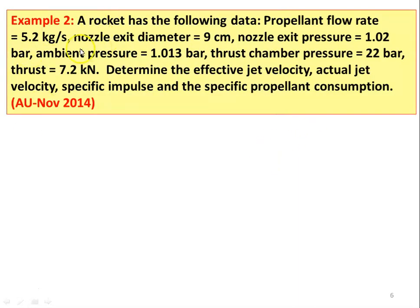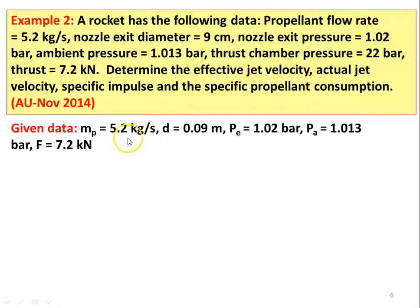Example number 2: A rocket has the following data — propellant flow rate 5.2 kilograms per second, nozzle exit diameter 9 centimeter, nozzle exit pressure 1.02 bar, ambient pressure 1.013 bar, thrust chamber pressure 722 bar, thrust produced 7.2 kilo Newton. Determine the effective jet velocity, actual jet velocity, specific impulse, and specific propellant consumption. This is from November 2014. This problem is very similar to the first problem with slight modification in the data.